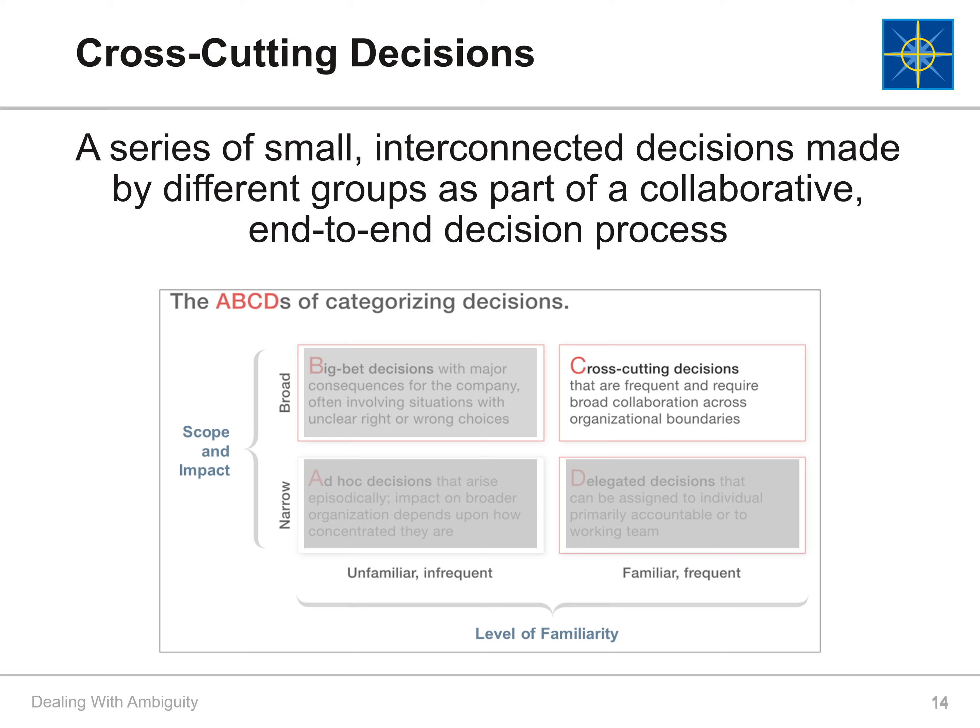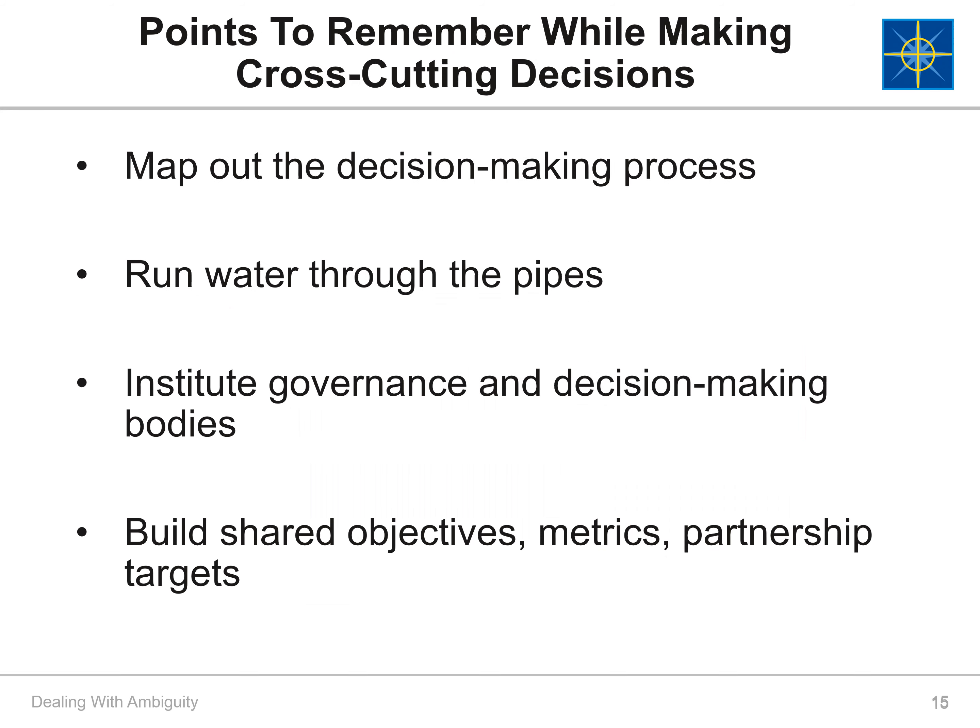The third type of decisions are cross-cutting decisions. These small and interconnected decisions are more frequent and familiar and have a broad scope and impact on the organization. Before making cross-cutting decisions, the first step is to map out the entire decision-making process — running the water through the pipes to test for any discrepancies. By running the water through the pipes numerous times, you can find the weaknesses in your process and work those out. Within the organization, decision-making bodies should be formed to build on shared objectives, metrics, and partnership targets.